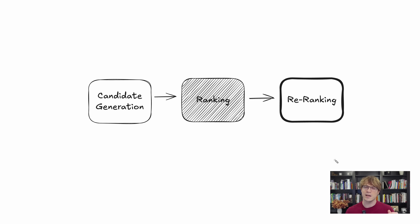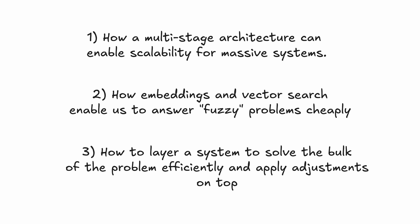I'm going to stop there before going too long — there's obviously a lot more we can get into. Just to recap some key points: we've covered how a multi-stage architecture using candidate generation enables scalability for massive systems and makes seemingly impossible problems possible. We showed how you can use embeddings and vector search to solve fuzzy problems cheaply. And finally, we showed how production systems are often layered with fine-grained adjustments applied at the last level, making problems more tractable. I hope you found this video valuable — if you'd like more, please subscribe. Until next time, talk to you later.